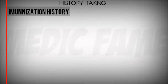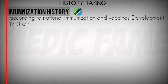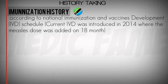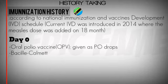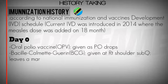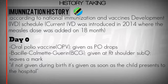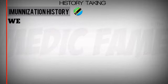We continue with immunization history, reported according to the national immunization and vaccines development schedule introduced in 2014, when a booster measles dose was added at 18 months. At day zero, we give oral polio vaccine as per oral drops and BCG, given at the right shoulder subcutaneously. If BCG is not given at birth, we give it as soon as the baby presents to the hospital.